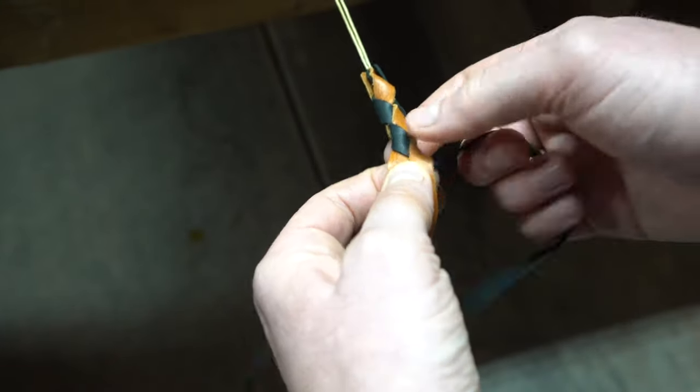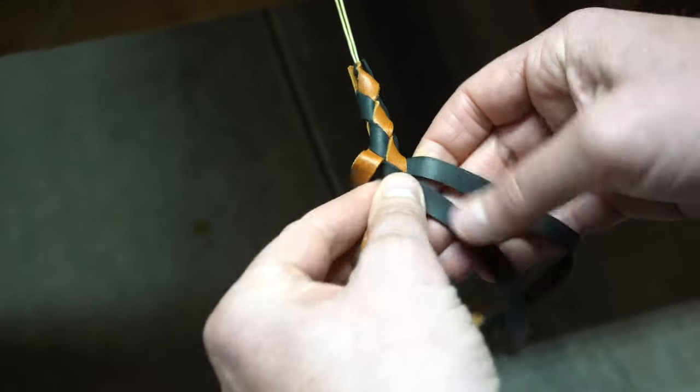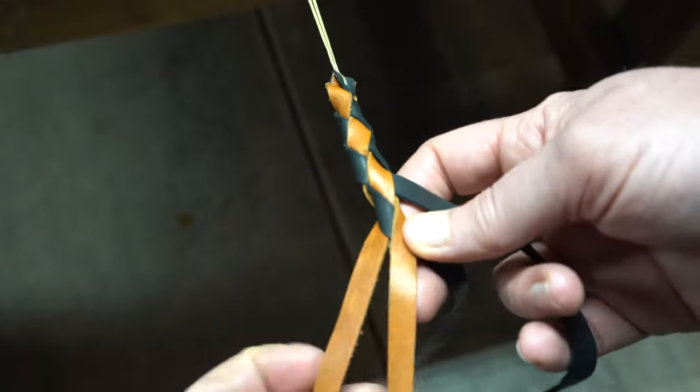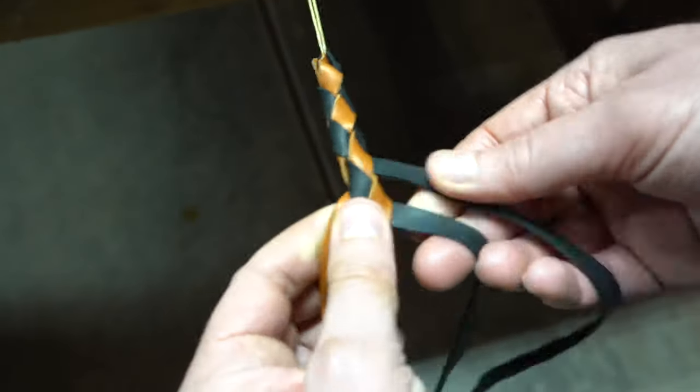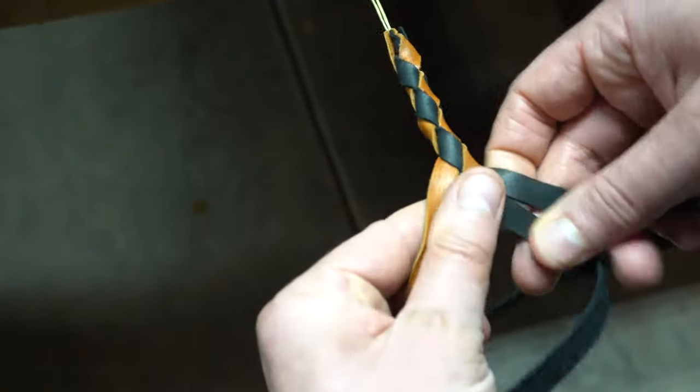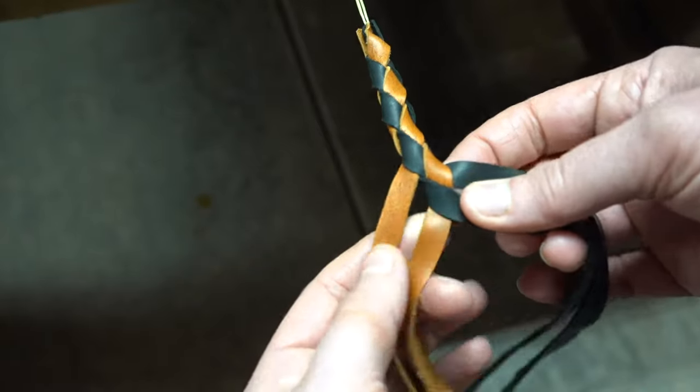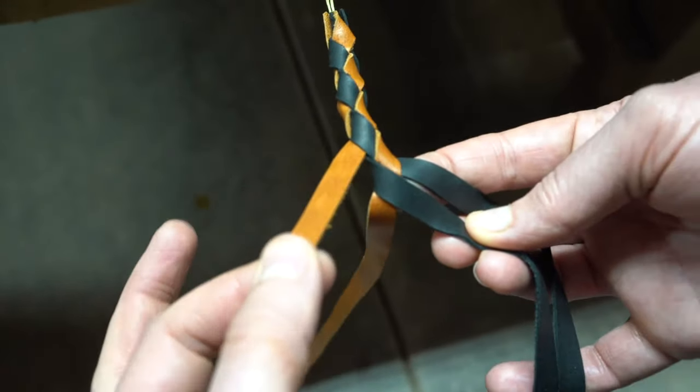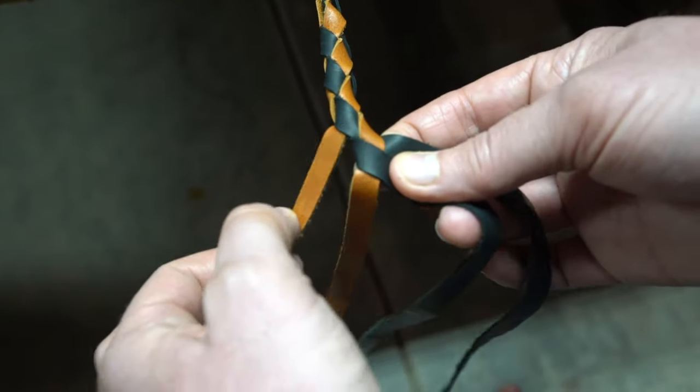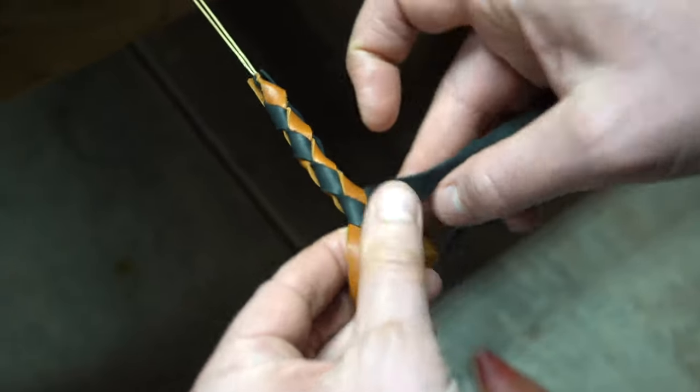And don't worry if it's kind of loose at the beginning. If you ever get lost or it comes apart, you just want to bring yourself back to all your strands flat. And it looks like you have a braid on one side and a loose piece of leather on the other side. You always take that upper loose piece of leather, around the back and over the middle strand.